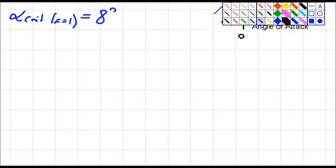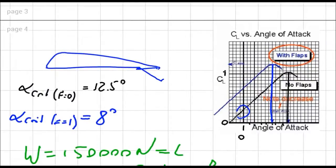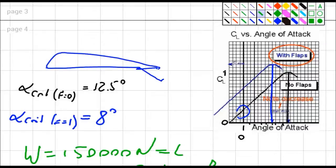Now we want to know what's our stall speed. We want to know at which speed we need to pull that much of an angle of attack in order to carry our weight. Now we know again that our weight is 150,000 newton and we fly straight and level so that's equal to our lift. We remain with our wing area of 30 square meters, our air density close to sea level is 1.225 kilograms over meter cube. That's basically all we need to know.